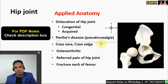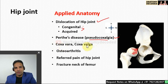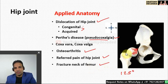Applied anatomy of the hip joint: dislocation is common, with congenital dislocation more common than acquired. The head of the femur is displaced posteriorly. Perthes disease refers to flattening of the head of the femur, also called pseudocoxalgia. Coxa vara refers to a decrease in the neck-shaft angle (normal ~125°); coxa valga refers to an increase. Osteoarthritis is inflammation of the hip joint. Referred pain from the hip may be felt in the knee, as the obturator nerve supplies both joints.